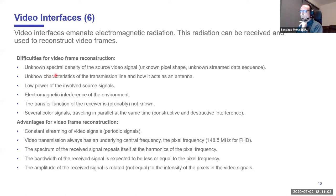What are the difficulties for capturing the video frames? First of all, we don't really know the spectral density of the source video signal. We don't know the pixel shape. We don't know what data is being transmitted at that point in time, and this varies all the time. Also, we don't know the characteristics of the transmission line. We know we have a cable, but this cable varies in length and we cannot characterize it, and we don't know how this acts as an antenna.